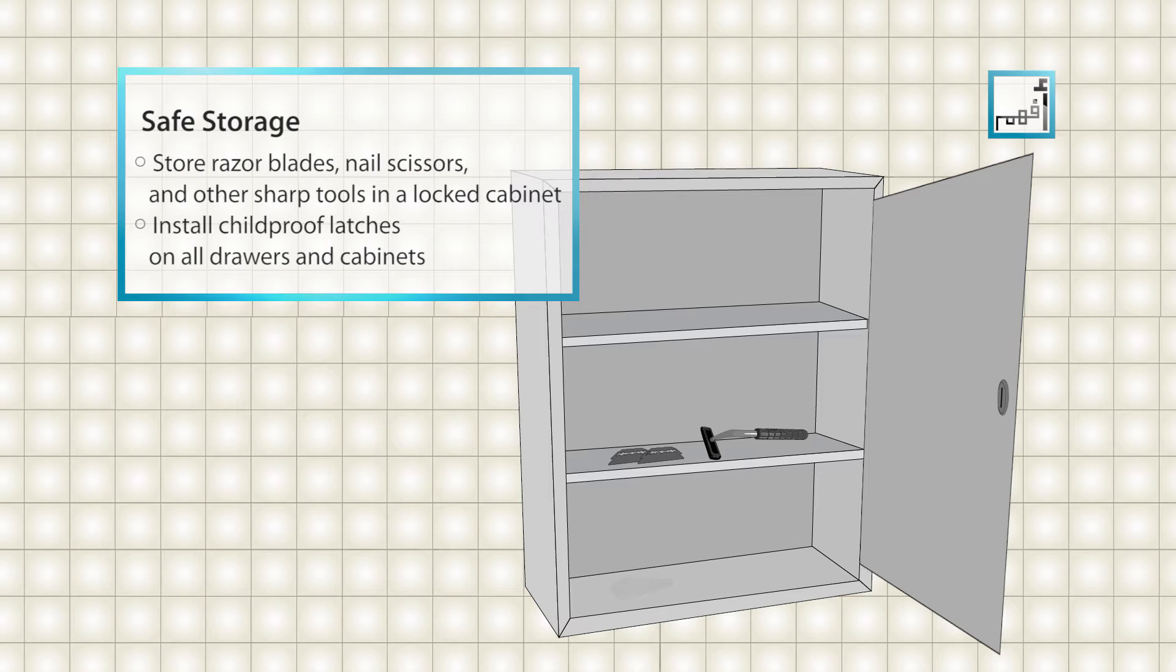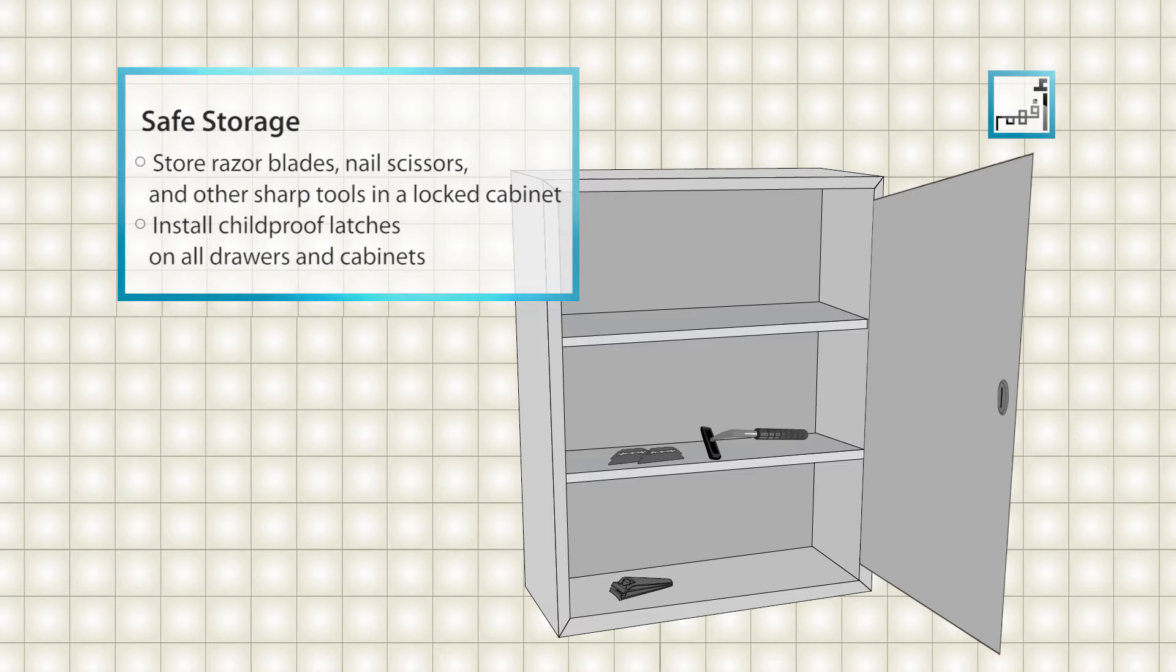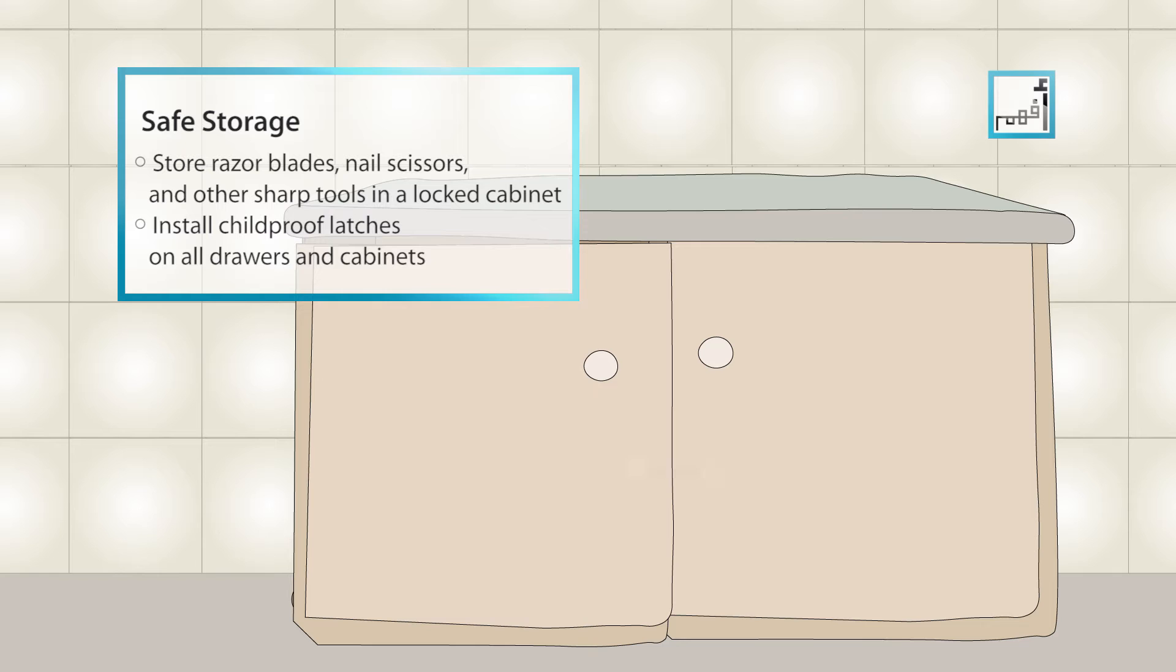Store razor blades, nail scissors, and other sharp tools in a locked cabinet. Install child-proof latches on all drawers and cabinets.